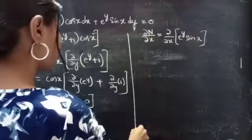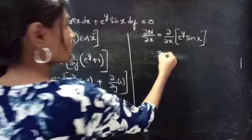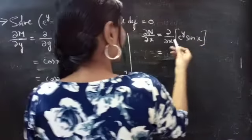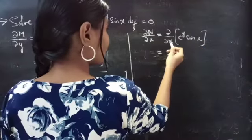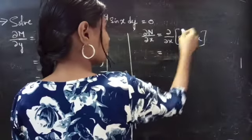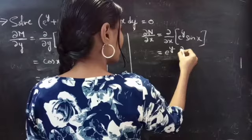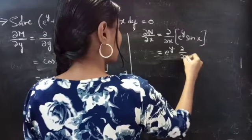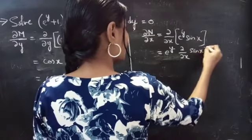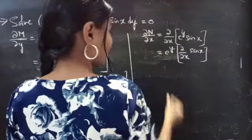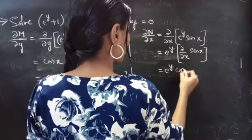Now we will find the partial derivative of N with respect to x. Here we do partial differentiation with respect to x, treating y as constant. So e power y is constant, into partial derivative of sin x with respect to x. This equals e power y into cos x.